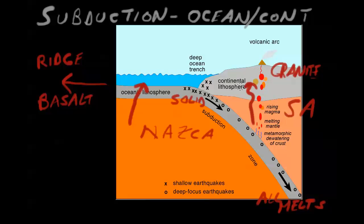The Andes Mountains are a great example of what forms at an ocean-continental subduction boundary. The key thing to remember is that at a subduction boundary it's always the plate with greater density that subducts. The basalt ocean crust is old and dense, so it subducts underneath the continental crust, and as it melts it rises up.